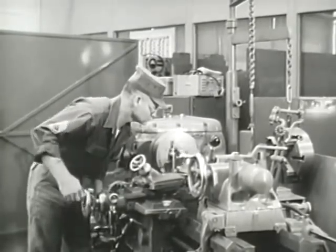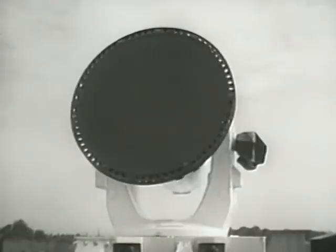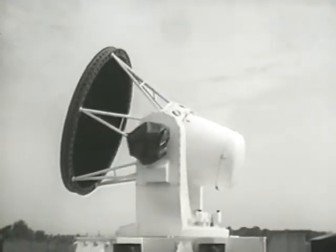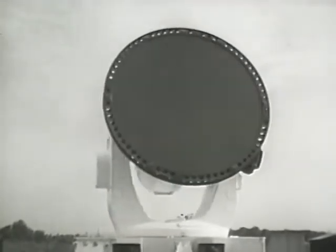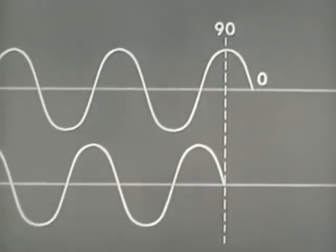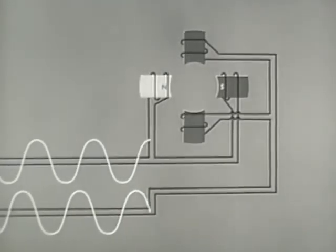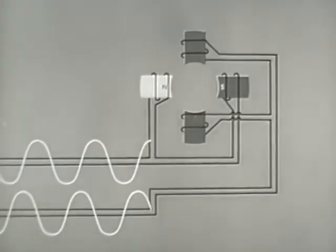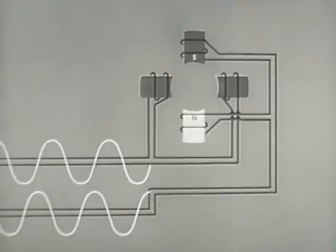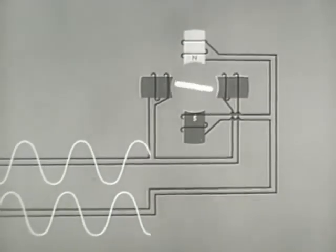Three-phase motors have special value in situations where it is important to maintain constant speeds under changing loads. Another type of AC motor is the two-phase induction motor, used especially where it is necessary to change direction of rotation quickly, such as in a radar antenna. The current used in this motor is two-phase AC — two separate AC voltages 90 degrees out of phase. Just as in three-phase motors, the phase difference is used here to energize the field poles progressively, causing electrical rotation of the magnetic field. The rotor turns in the same direction as the magnetic field but at a slightly slower speed.